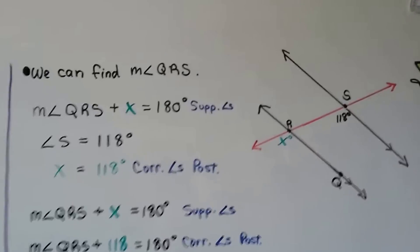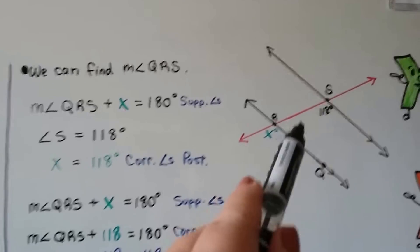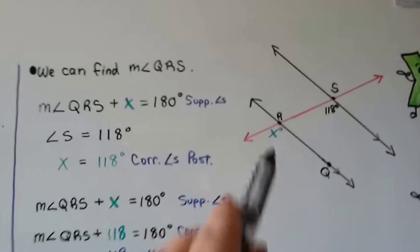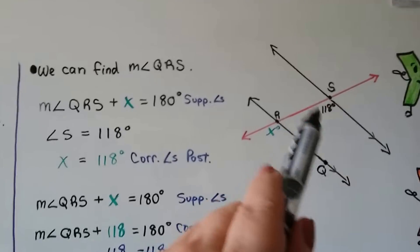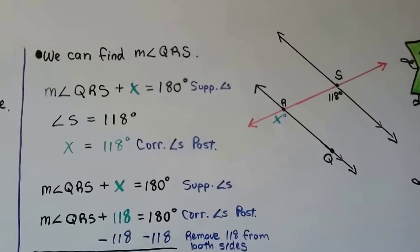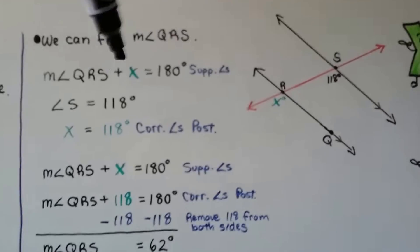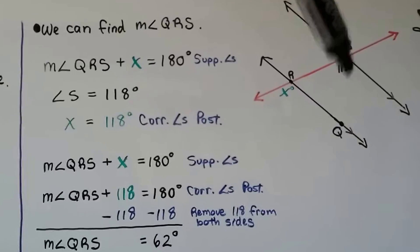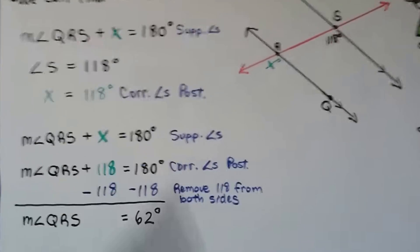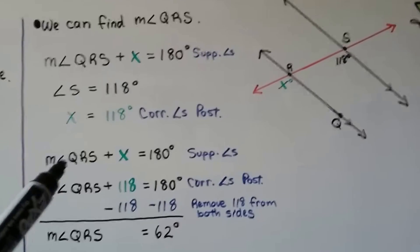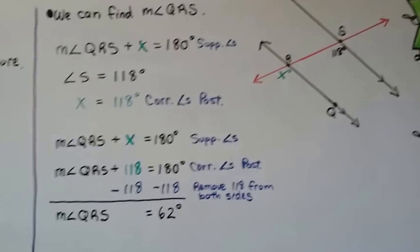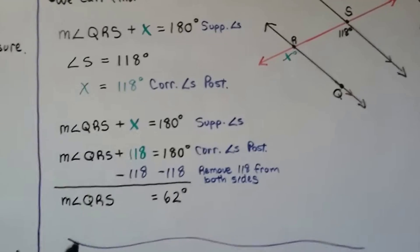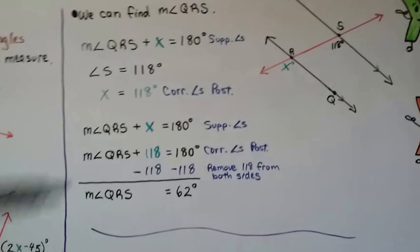We can find the measure of angle QRS. Because of the corresponding angles postulate, if the given angle is 118 degrees, its corresponding angle X is also 118 degrees. We know that 118 plus some number equals 180, so angle QRS plus X equals 180 degrees because they're supplementary angles. If X equals 118 degrees, we subtract 118 from each side of the equation and get that the measure of angle QRS is 62 degrees — that's what's left over from the supplementary angle.